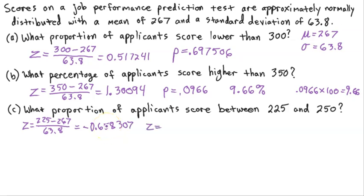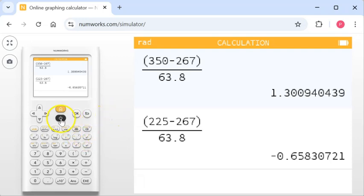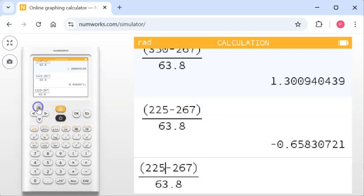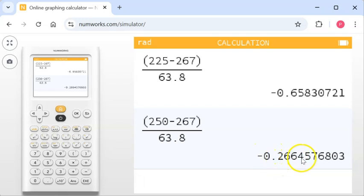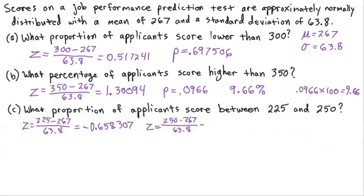Now we need the Z-score for 250: Z equals (250 minus 267) divided by 63.8. Here's a cool feature — I can arrow up, highlight the previous expression, hit OK to bring it down, and change 225 to 250. We execute and get negative 0.266457. The 6 rounds the 7 up to an 8, so our Z-score is negative 0.266458.